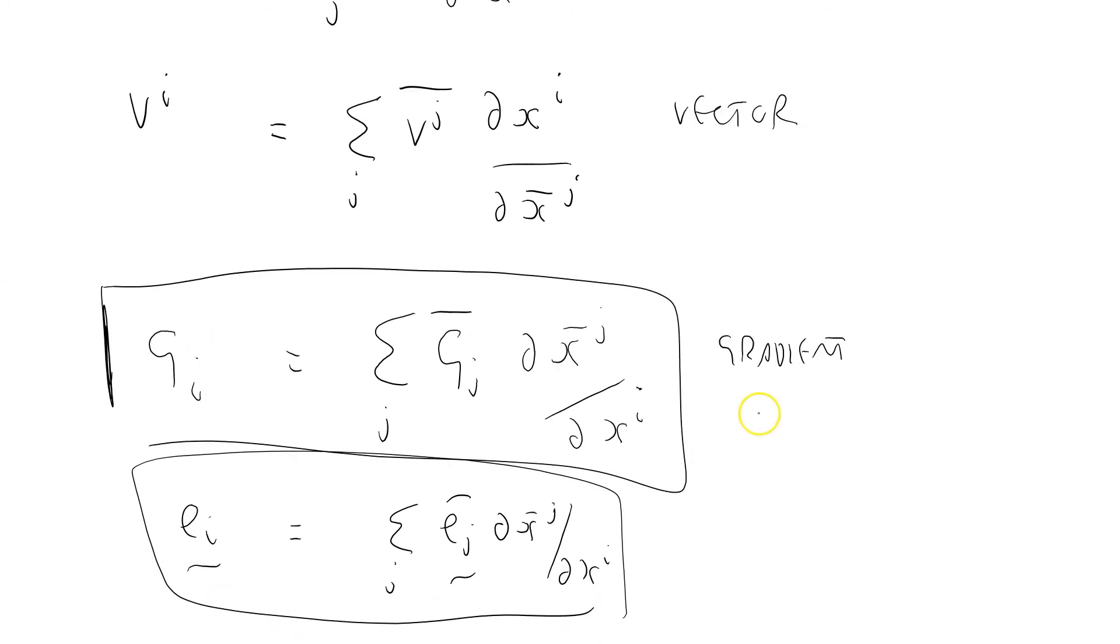So you call that a covariant, co-meaning with, as opposed to this one, which is called a contravariant. Contra-meaning against. If you write this out as a matrix, it is the Jacobian matrix, you'll see that this Jacobian matrix is actually the inverse. It's not quite the inverse, it's the transpose of the inverse of this Jacobian matrix here. Because this one's got the x bar on the bottom, and this one's got the x bar on the top. So it's the other way around.